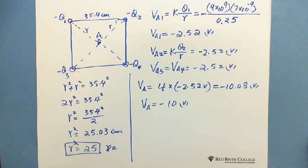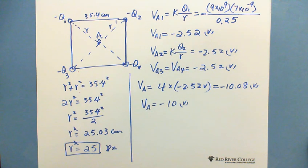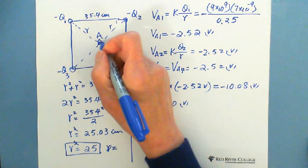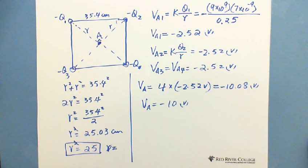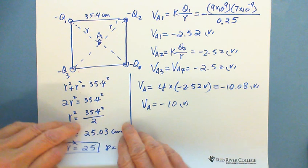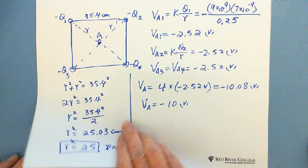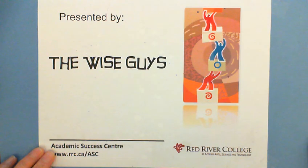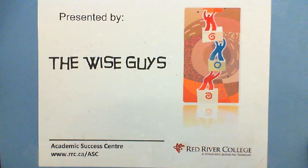So this question shows you the difference between field strength and electric potential at this point. This is presented by Wiseguys — thank you very much.